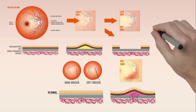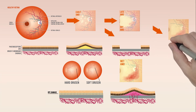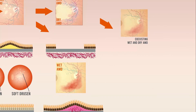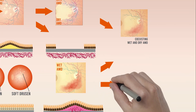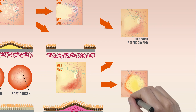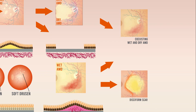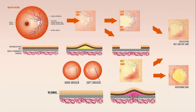Wet and dry AMD can occur together: patients with geographic atrophy can develop choroidal neovascularization, and patients with neovascularization can develop regions of geographic atrophy. Ultimately, wet AMD can lead to the formation of a disciform scar — a round, white or yellow fibrous region caused by choroidal neovascularization that forms within Bruch's membrane or between the RPE and retina.